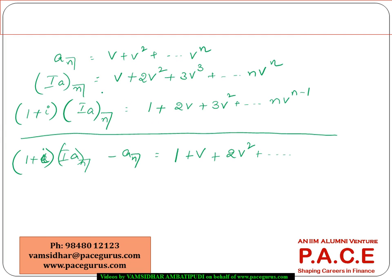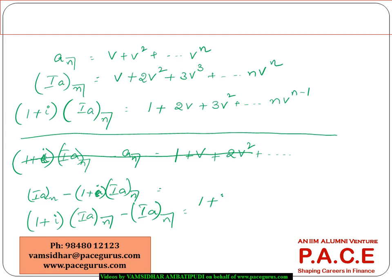Or probably we will do this way, iA_n, we got this, and you subtract 1 plus i into iA_n. Or the other way we subtract, 1 plus i times iA_n minus iA_n. If I do this subtraction, this is nothing but 1 plus v plus v squared plus so on, v power n minus 1 minus nv power n.